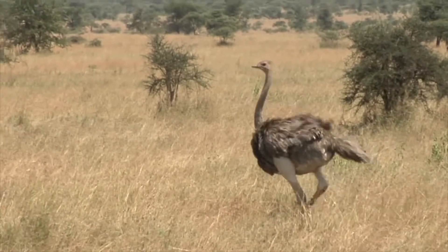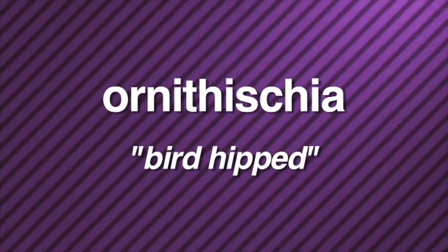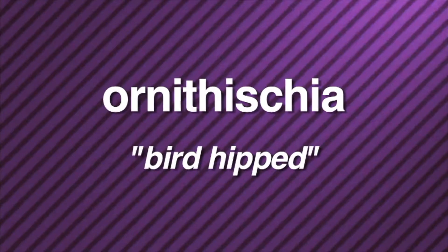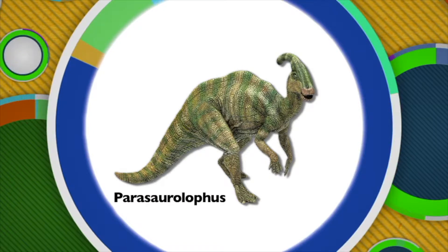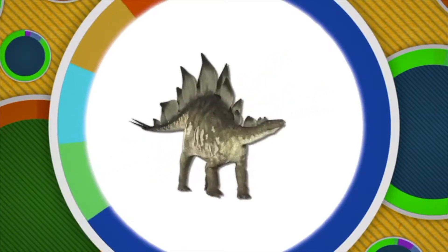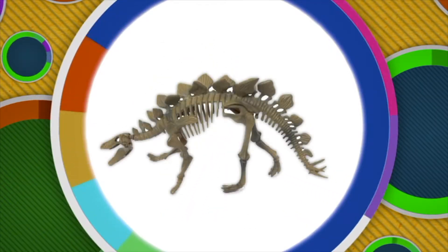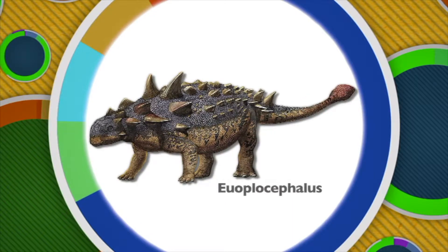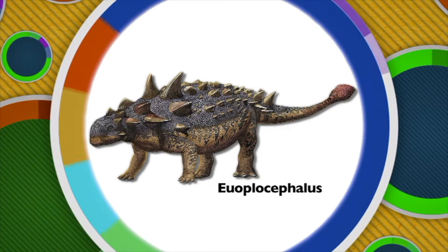The second group of Saurischian dinosaurs are known as Theropoda. These dinosaurs have sharp claws and walk on two feet, like Tyrannosaurus rex. Other dinosaurs had hips like modern day birds — their hip structure caused their legs to stick out from under their bodies. They're known as Ornithischia, which means bird-hipped. Ornithischian dinosaurs came in a wide variety of shapes and sizes. Some, like Parasaurolophus, walked on two legs and had a hollow bony crest on top of its head that could measure up to six feet long. Stegosaurus is an example of an Ornithischian that walked on four legs, with bony plates on its back. Euoplocephalus, another Ornithischian, also walked on four legs and could grow up to 25 feet long and 8 feet wide.